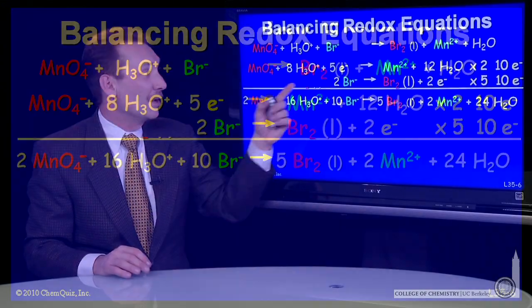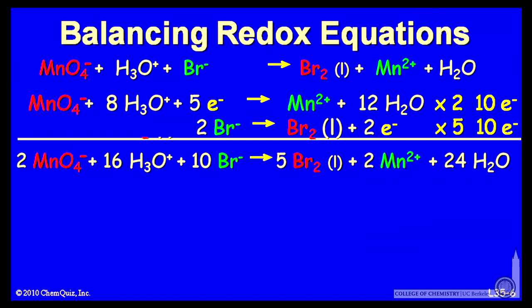So the sum of these two now with the appropriate stoichiometric coefficients are two of the permanganate and 16 H3O plus, 10 bromide ions. And that produces five moles of the bromine liquid and two moles of the manganese ion and 24 moles of water.